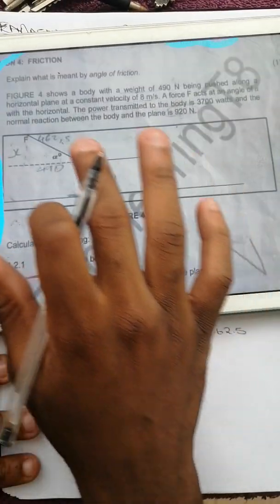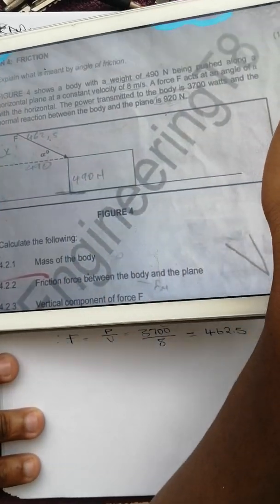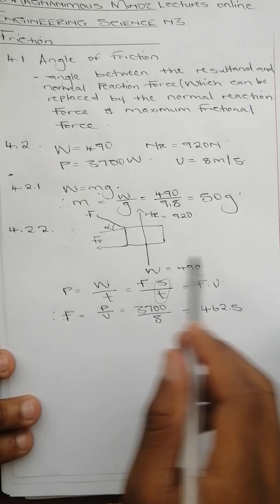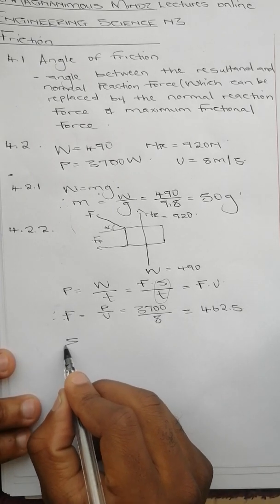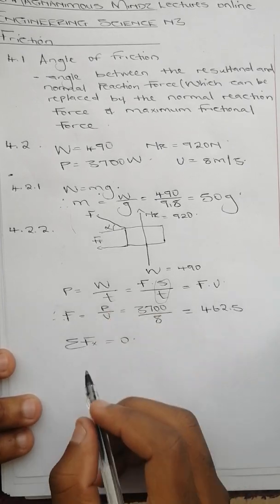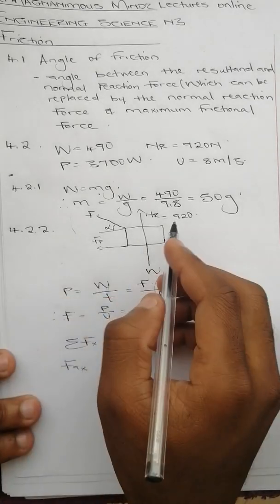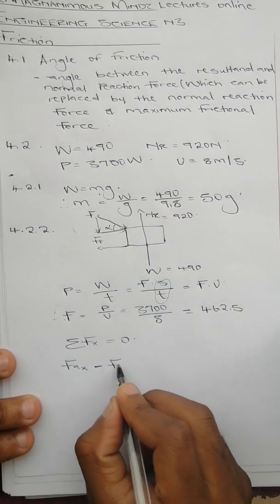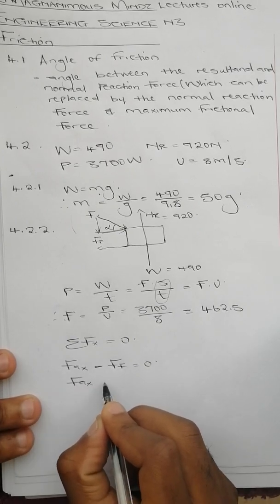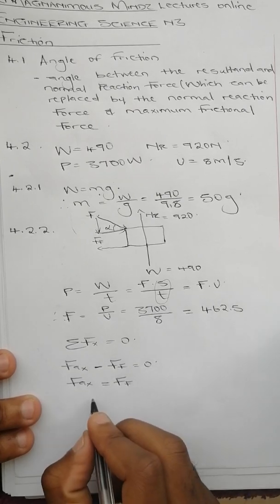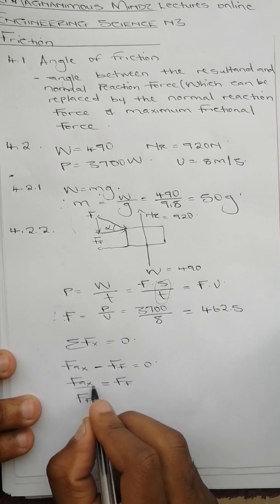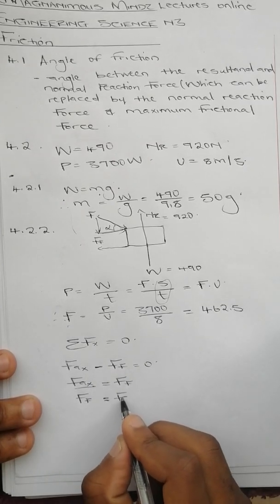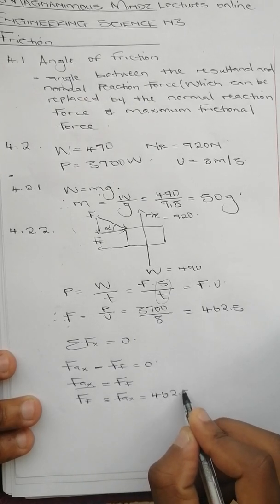Since the body moves at constant velocity, acceleration is zero and the body is in equilibrium. Setting up equilibrium in the X direction: FAX minus friction force = 0, therefore friction force = FAX = 462.5 Newtons.